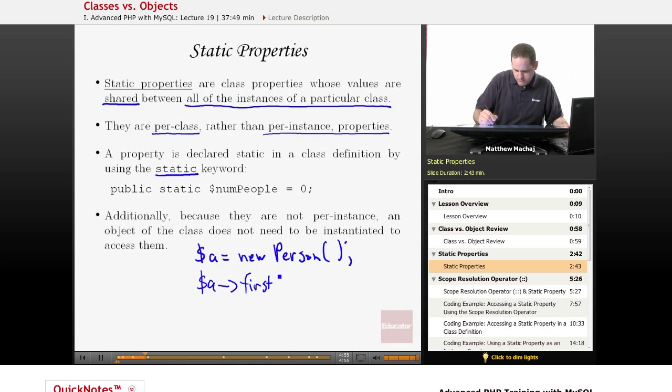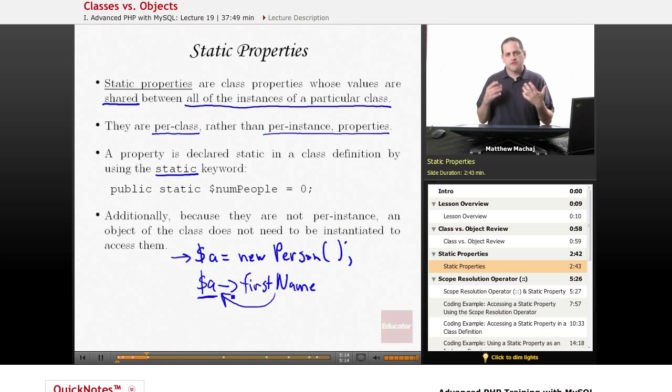And what this is, is a reference to an instance, to this instance of the person object that was created. Well, and that's why it's called actually an instance variable because this copy of first name is specific to this A variable right here. Well, because static properties aren't specific to a particular instance, you don't actually reference them using an object variable. And we're going to see about that in the next slide about how you actually access them.